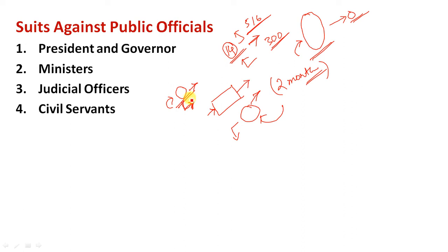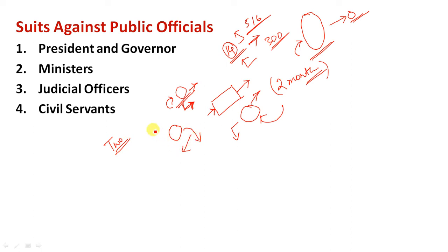In other cases, the liability of the civil servant for torts or illegal acts is the same as that of ordinary citizens. Civil proceedings can be instituted against them for anything done in their official capacity after giving two months of advance notice.